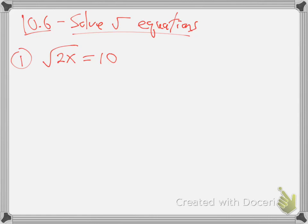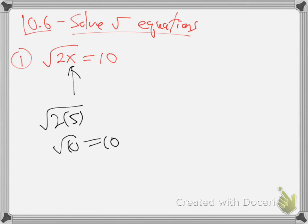Any guesses what could I put in there for x? Five won't work — you might think five, two times five is ten, but the root of ten doesn't equal ten. If I put in five, it's not just 2x, it's root of 2x, which means root of ten. That doesn't equal ten — square root of ten is about 3-something. But if you plug in 50 instead — two times 50 is 100, and the square root of 100 is...